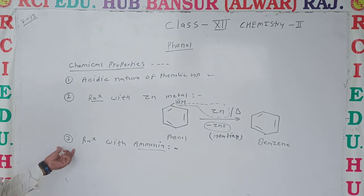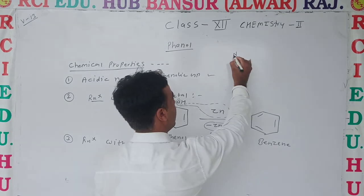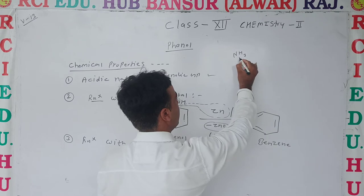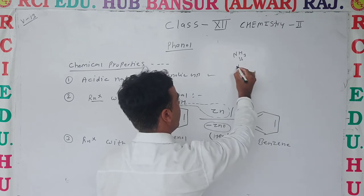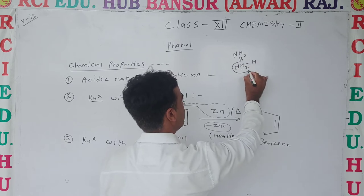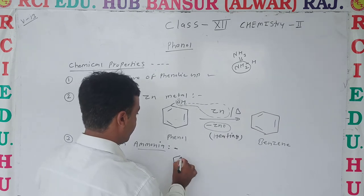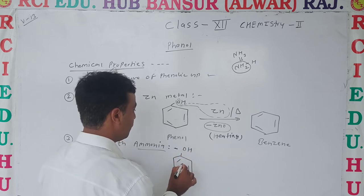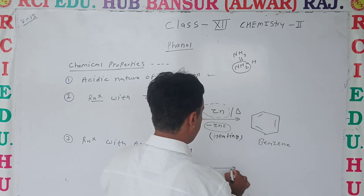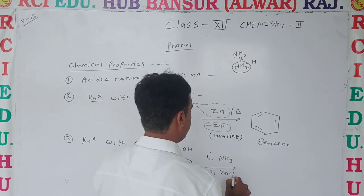Next reaction is the reaction with ammonia. You can see the structure of ammonia, that is NH3, which is divided into two parts: NH2 and H. So the NH2 part will react. Phenol reacts with ammonia in the presence of zinc chloride as a catalyst.